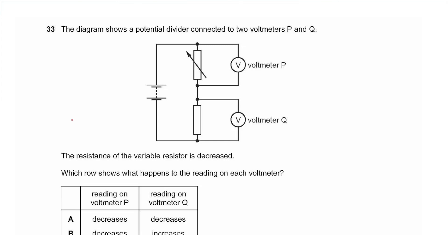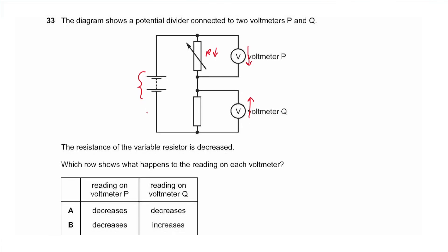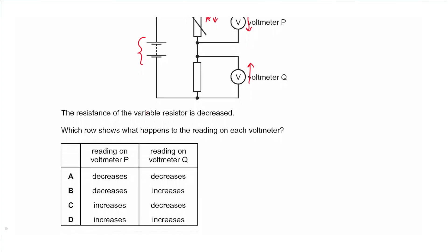Question 33 shows a potential divider connected to two voltmeters P and Q. The resistance of the variable resistor is decreased, causing the voltage across it to decrease. Automatically the other voltmeter reading will increase, since the total battery voltage is constant — if one decreases the other must increase. So P decreases and Q increases, and the answer is B.